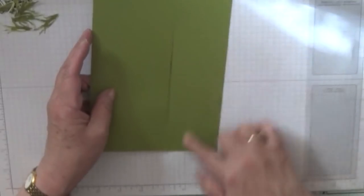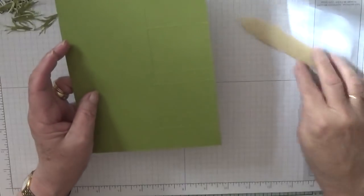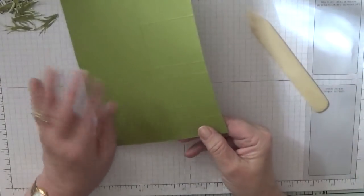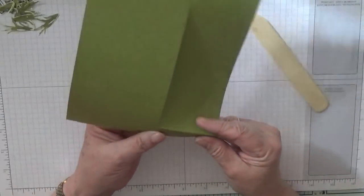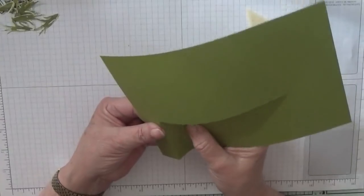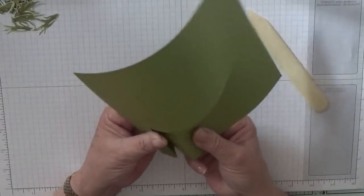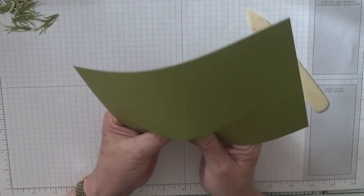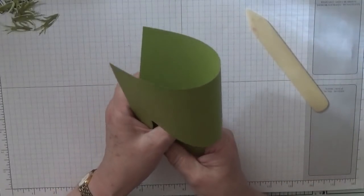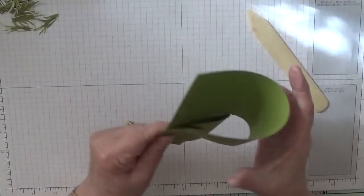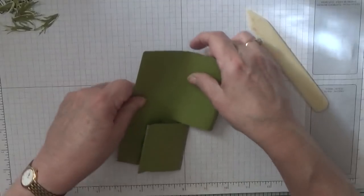Now I've got this. I know the folds are on the wrong side, but that doesn't matter. With my bone folder, I'm going to fold the first one in a mountain fold. The second one in a valley fold. The third one in a mountain. The fourth one in a valley. And the fifth one in a mountain.